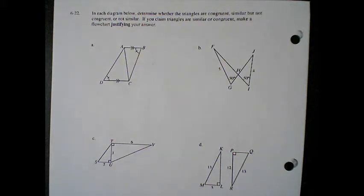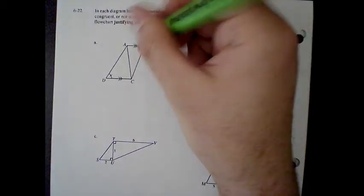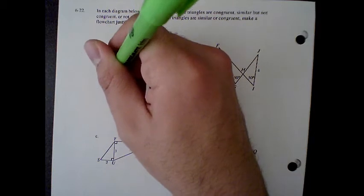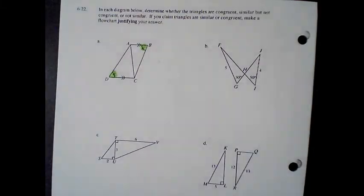So question A, let's start with the piece of information that we're given. We are given that angle B is congruent to angle D due to the tick marks. We're also given parallel lines AB is parallel with DC. Do you think these are congruent, similar but not congruent, or not similar?